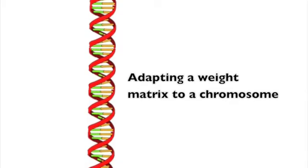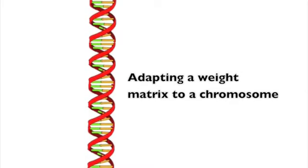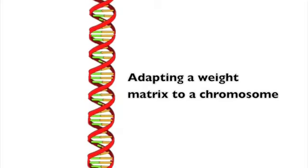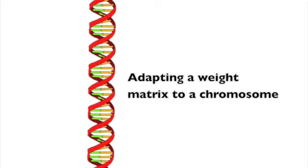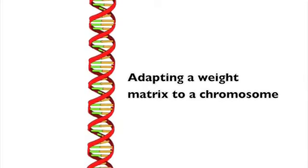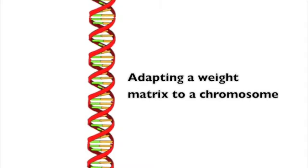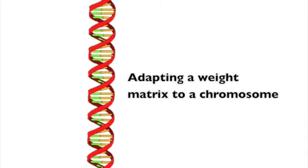This basically transforms the neural network into a long stream of numbers. This is ideally suited to a chromosome, and all neural networks of the same configuration will have the same length, which is also a requirement for using the genetic algorithm.